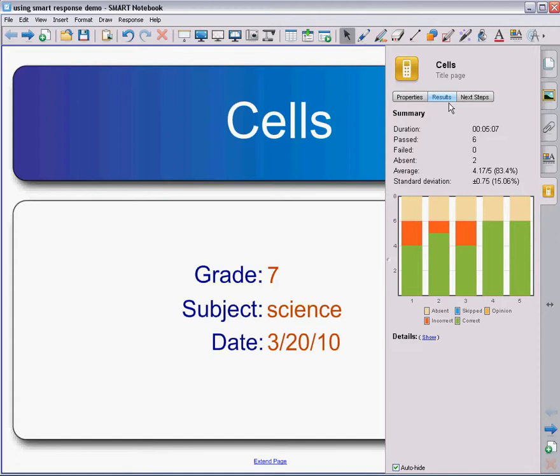Instead of progress, I have results, and it tells me a summary of the quiz - how long it took to take the quiz, how many students passed and failed, if there were absent students, what the class average was, what the standard deviation was. You can look at all those details.